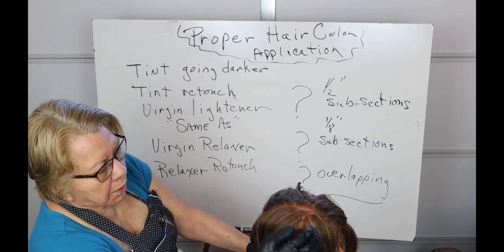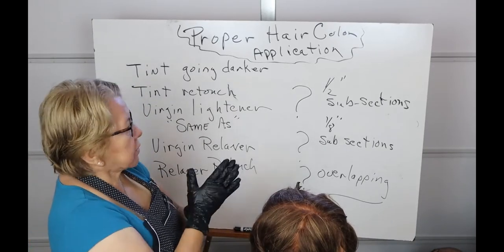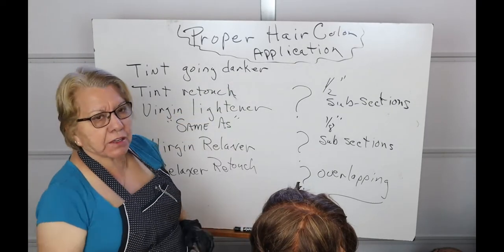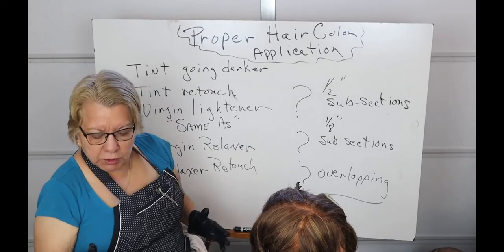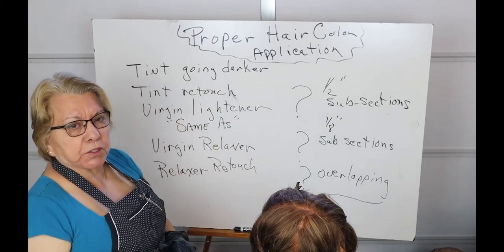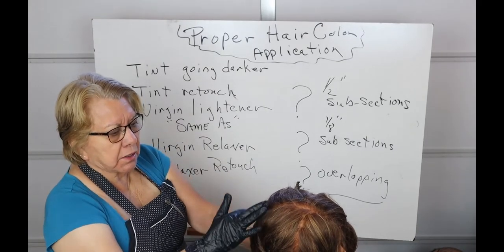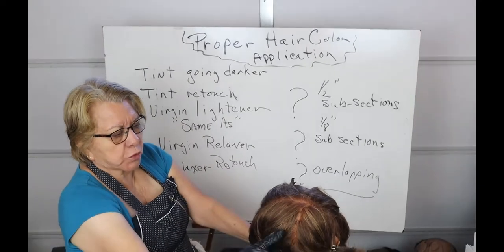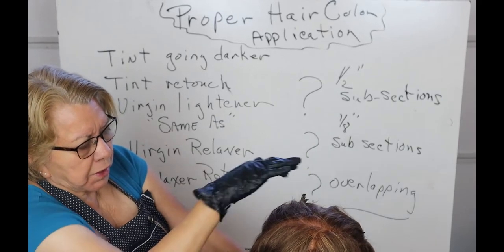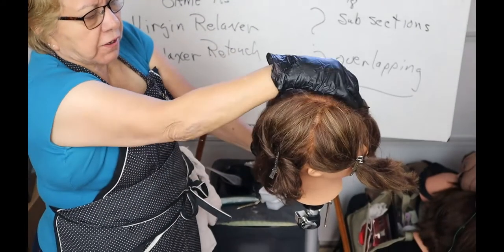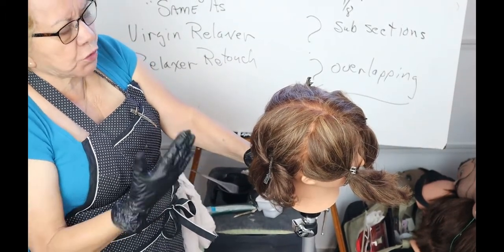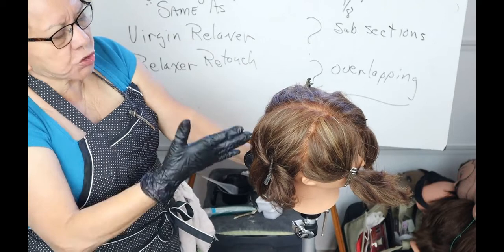Okay students, one of the things we want to practice today is proper hair color application — we're doing the brush method. You'll want to make sure your mannequin is separated into four quadrants: center frontal to center nape, tip of the ear to tip of the ear, then you section each one off. This is part of keeping your color organized.